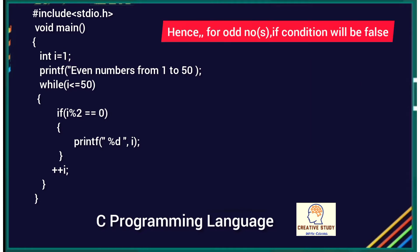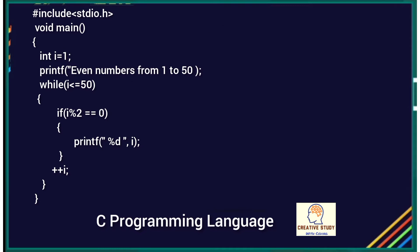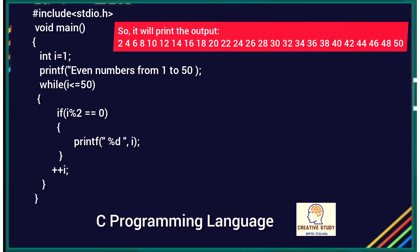For odd numbers the if condition is false each time, and for even numbers the condition is always true. So the loop iterates till fifty and prints: 2, 4, 6, 8, 10, 12, 14, 16, 18, 20, 22, 24, 26, 28, 30, 32, 34, 36, 38, 40, 42, 44, 46, 48, and 50.